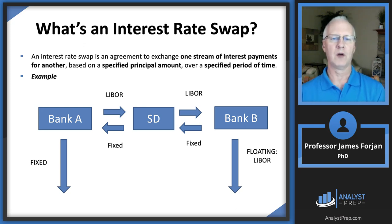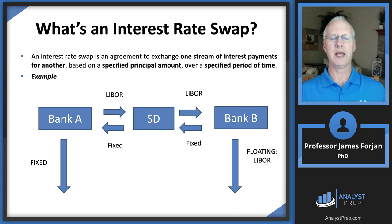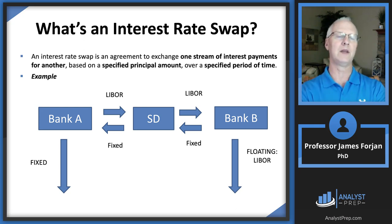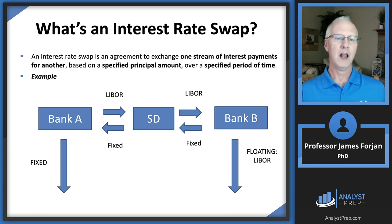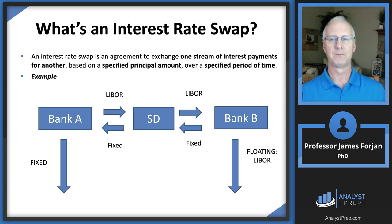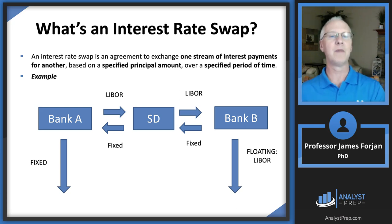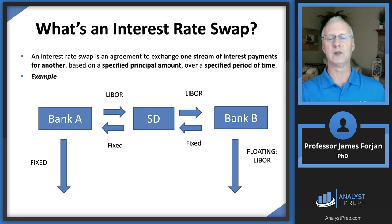Here's an example. Think of yourself as either Bank A or Bank B. Bank A is paying a fixed rate and Bank B is paying a floating rate. Bank A says, I'm paying a fixed interest rate and I'd like to pay a floating rate instead. So Bank A picks up the phone and calls a swap dealer, saying: will you pay that fixed rate for me? The swap dealer agrees but asks: what do I get in return? Bank A offers to pay a floating rate. That other party is a financial institution — a swap dealer, which is why I have SD in the middle.